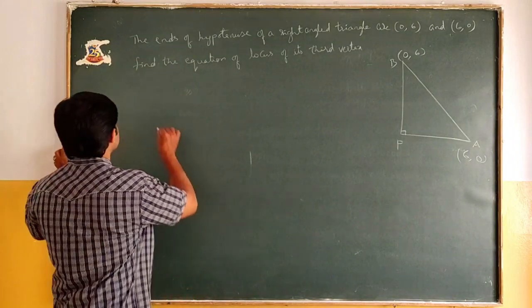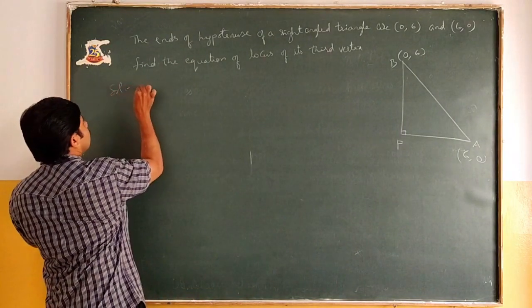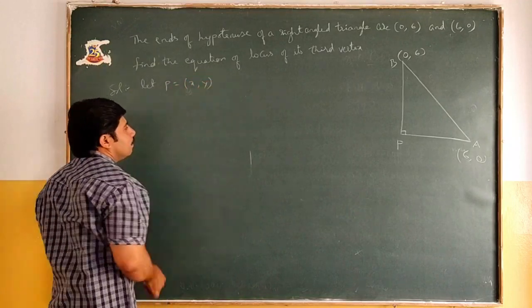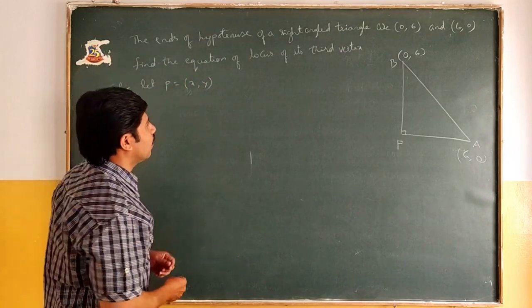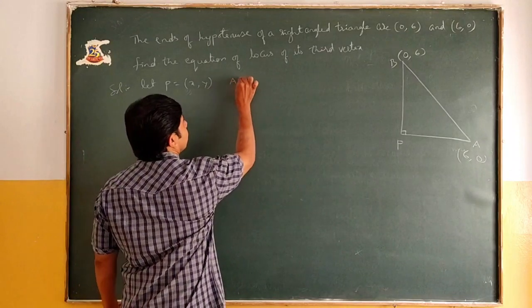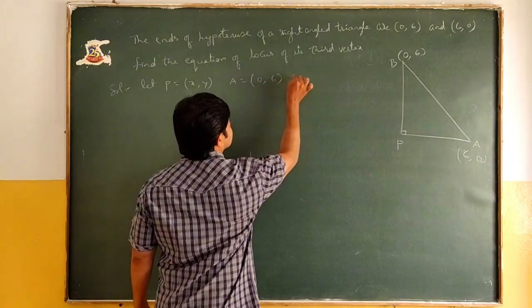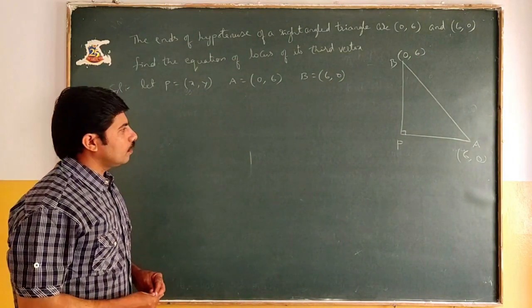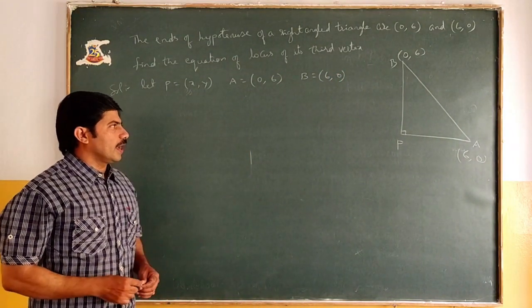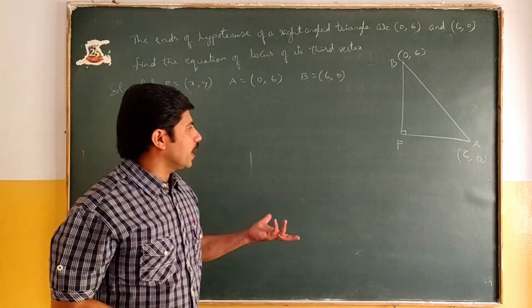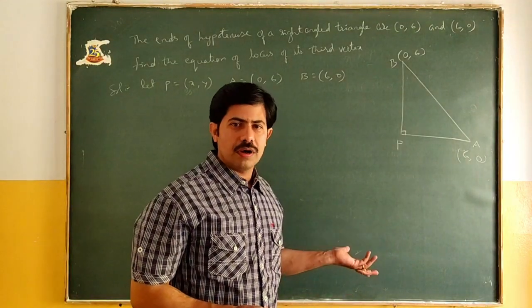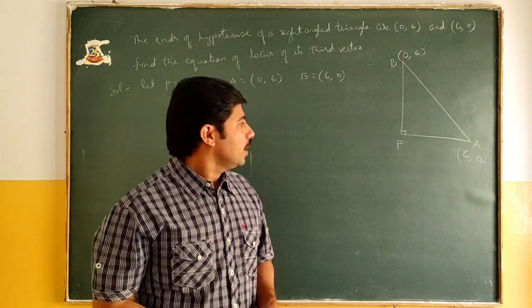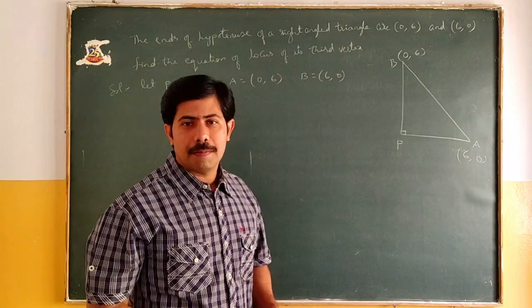We assume: let P = (x, y) be the locus of a point. Then A is (0,6) and B is (6,0). It is a right angle triangle, so whenever we have a right angle triangle, we apply Pythagoras theorem. Because locus means it satisfies certain condition. Here the condition is nothing but Pythagoras theorem.